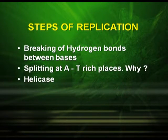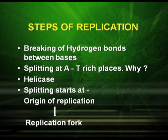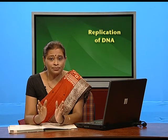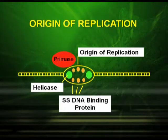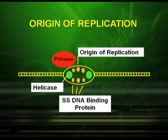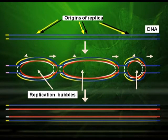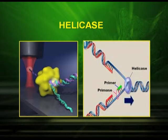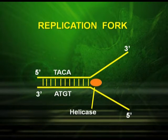As shown in the diagram, at the origin of replication the enzyme helicase binds. DNA binding proteins also help in unwinding and unfolding of the DNA strands. As the DNA strands unwind, replication bubbles are formed. The helicase enzyme binds to the two DNA strands and helps in the formation of the replication fork, as clearly shown in the following diagram.